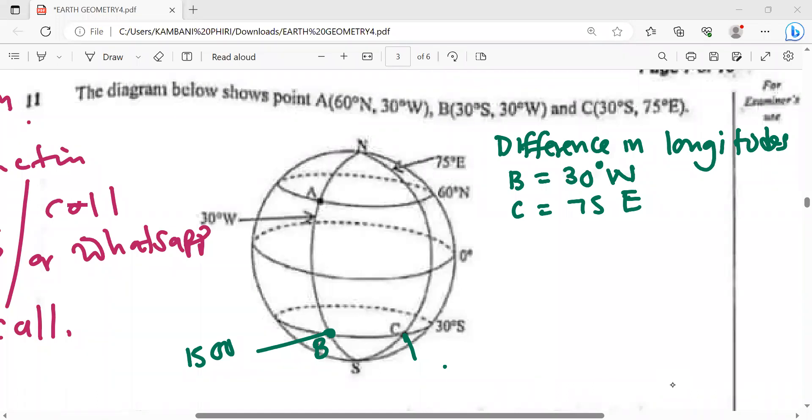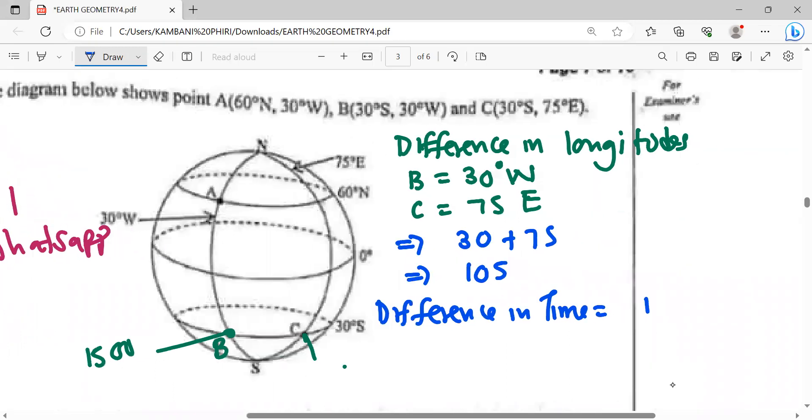We are going to say 30 plus 75. When you add here you get 105. Now to find the difference in time, you divide 105 by 15 degrees, and this will give you 7 hours.